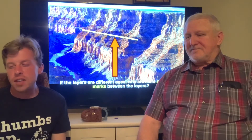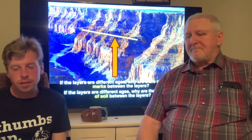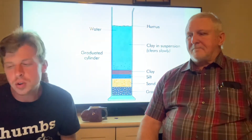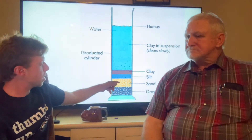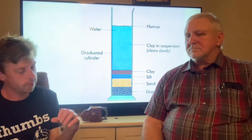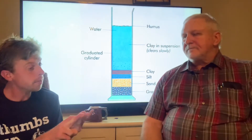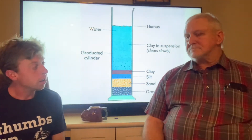If the layers are different ages, why are there no erosion marks? Clay, silt, sand, and gravel — they all try to prove that for millions of years, through the Cretaceous, Jurassic, Triassic, and Permian. But we'll find out that's not true, because you can buy a sand mixer at Walmart and get clay, silt, sand, and gravel all in one box in just a matter of two or three minutes.